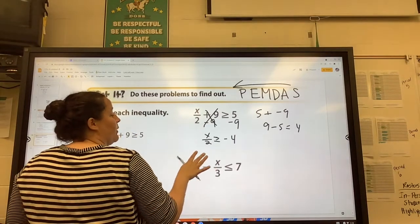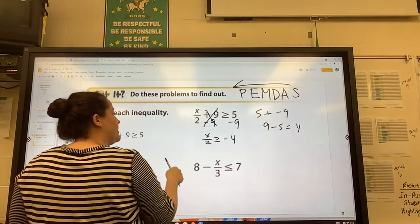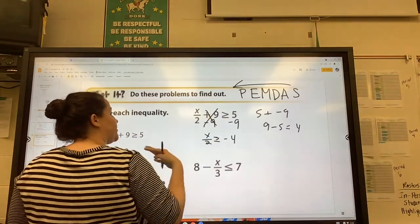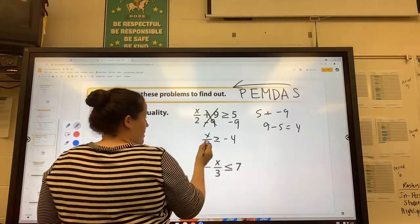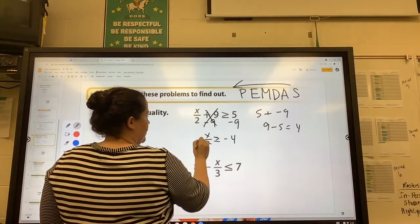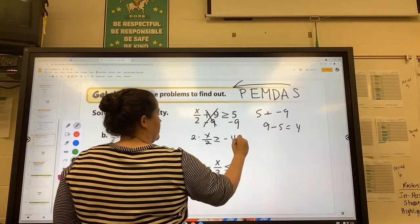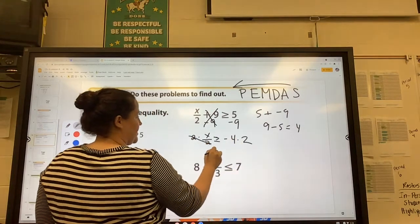We haven't done anything that would require us to change the sign yet, because all we're doing is adding and subtracting, which does not change the sign. Now to get rid of divided by 2, we multiply both sides by 2.